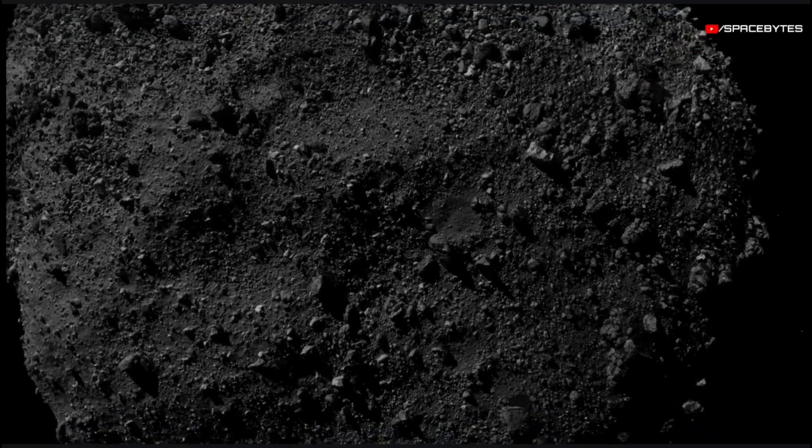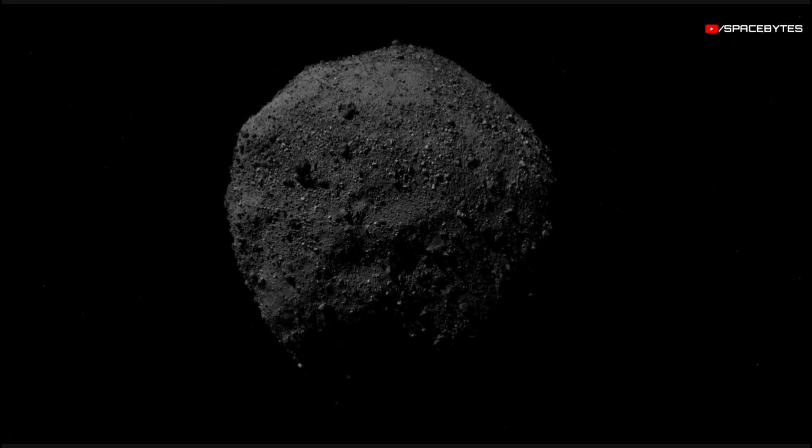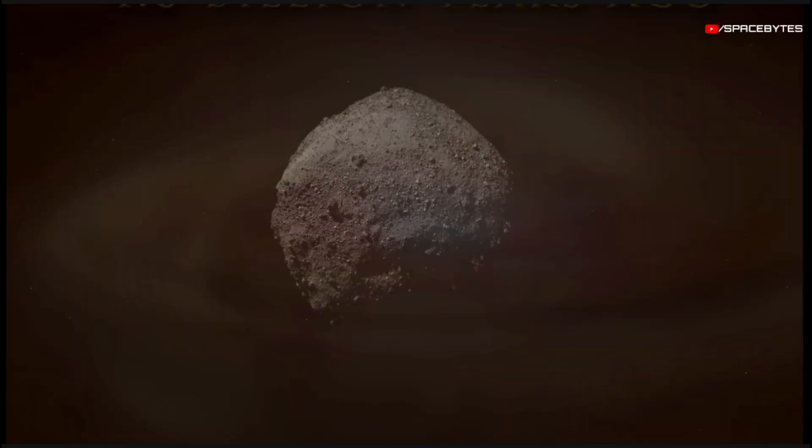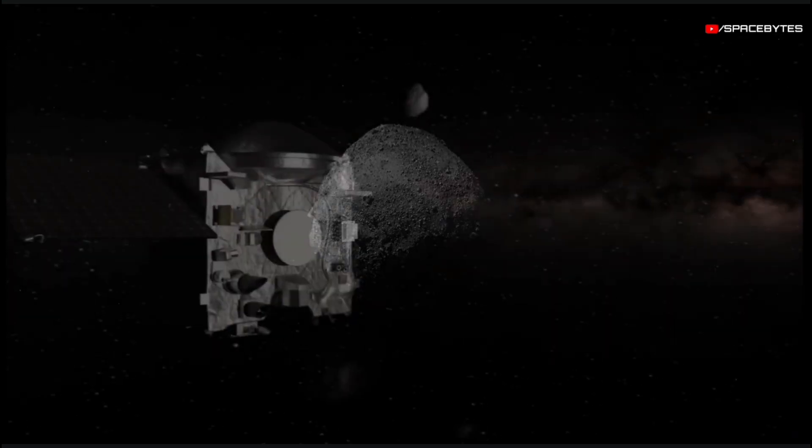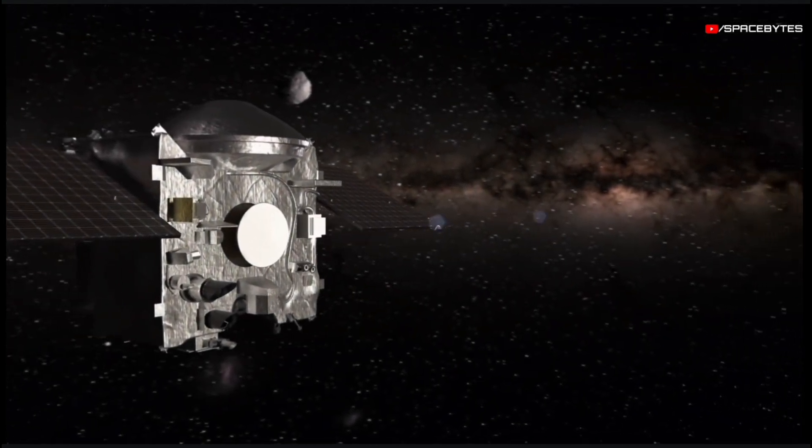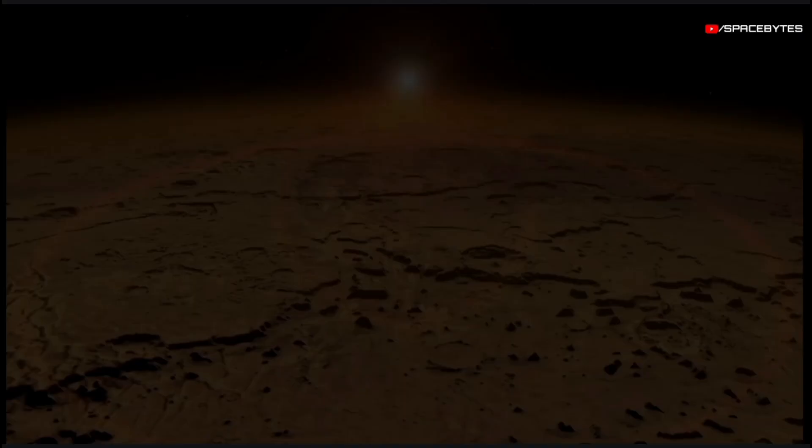Asteroids are rocky fragments left over from the formation of the solar system about 4.6 billion years ago. An asteroid is classified as a near-Earth object when its distance from our planet is less than 1.3 times the distance from Earth to the Sun.